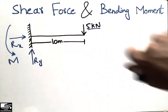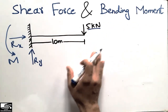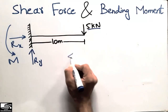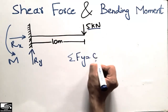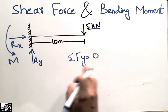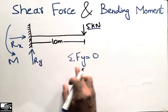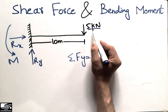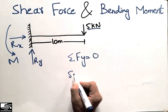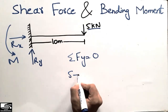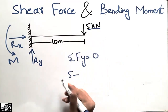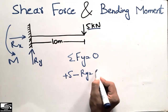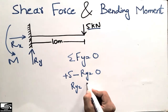To find the support reaction, I will apply the equilibrium condition: summation of forces in the vertical direction equals zero. The total vertical force acting on this beam is zero. One vertical force is 5 kilonewtons and the other is Ry, acting in opposite directions, so Ry comes out to be 5 kilonewtons.